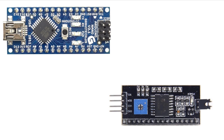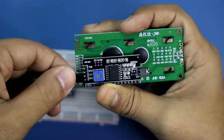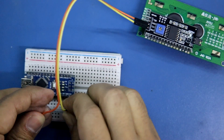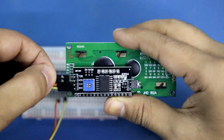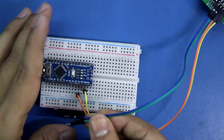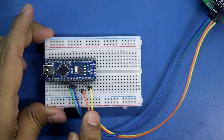Here is the Arduino Nano and the I2C LCD module. VCC connects to the 5V pin, GND to GND, SCL is connected to A5, and SDA is connected to A4. So this is a very simple connection — VCC and GND, SCL and SDA, A5 and A4.